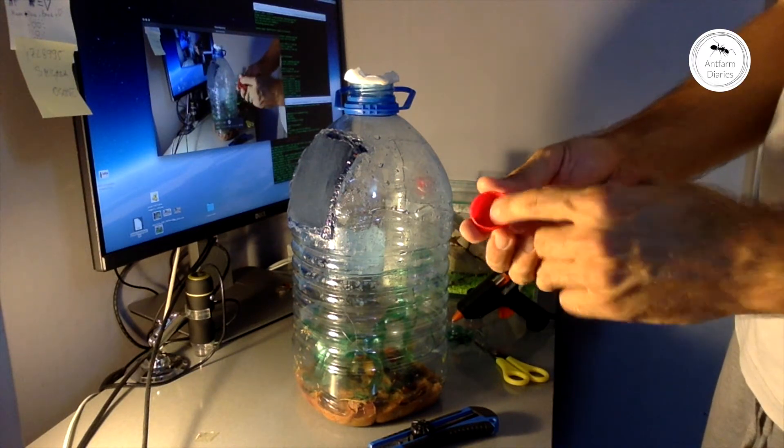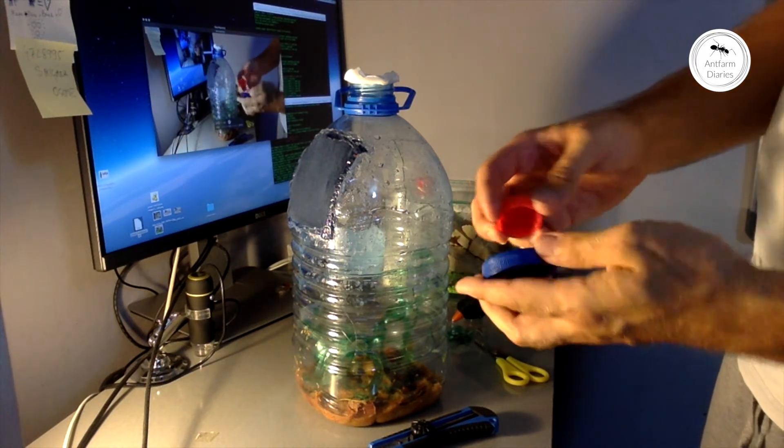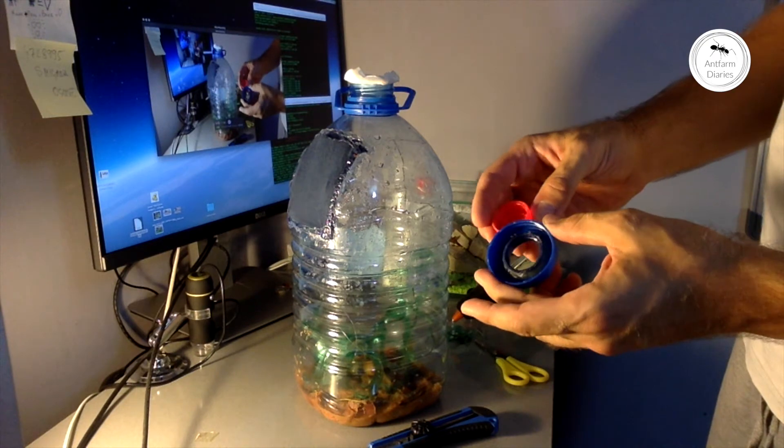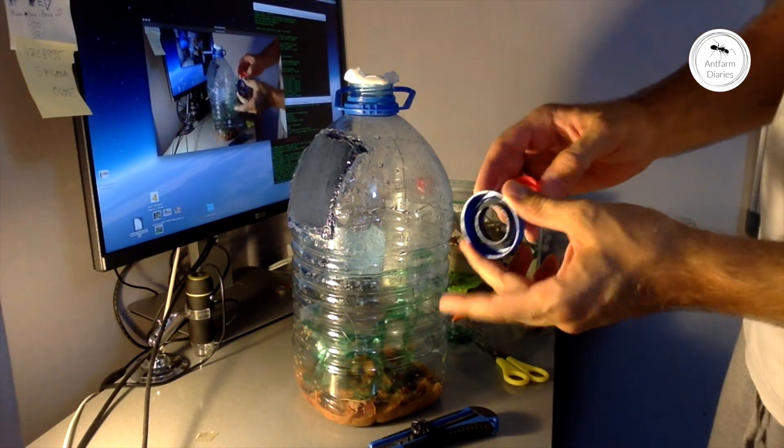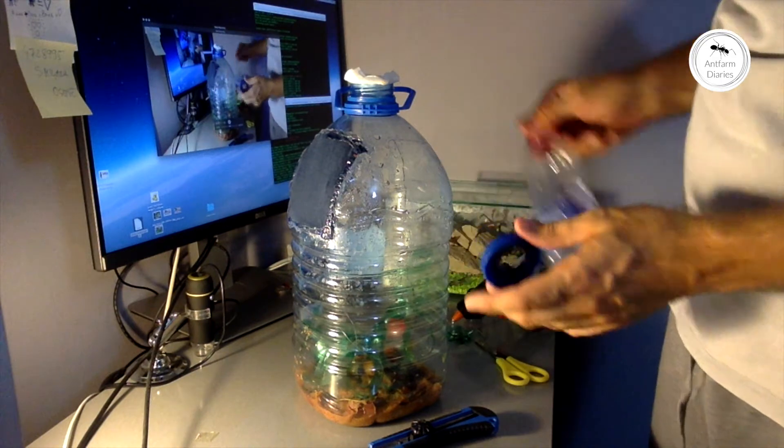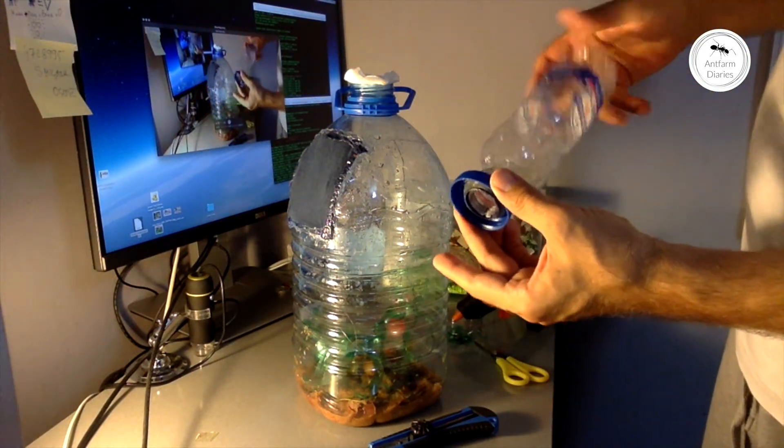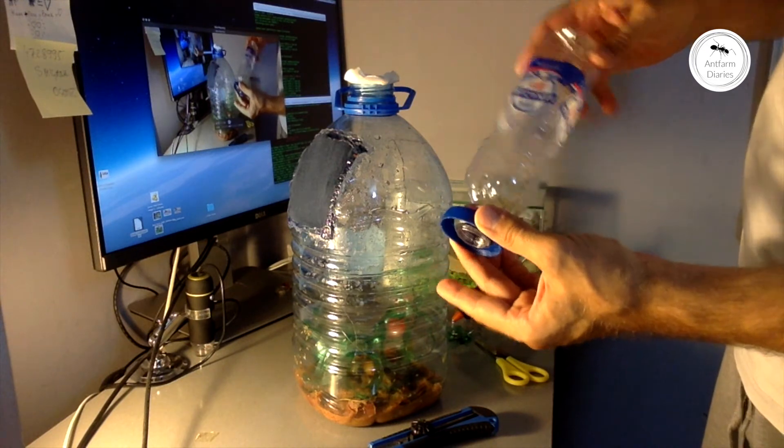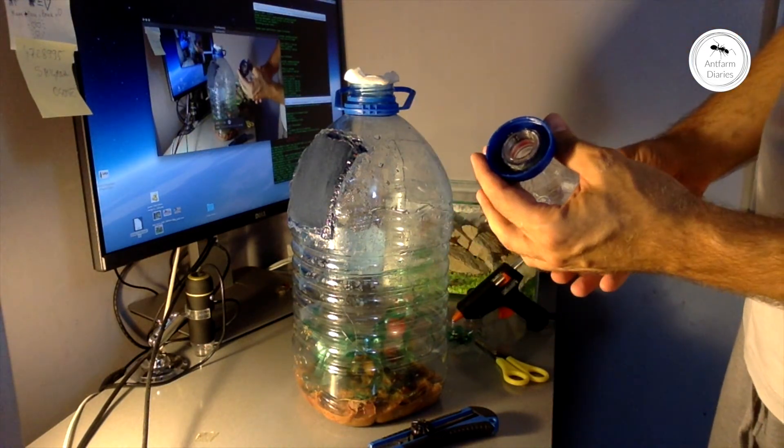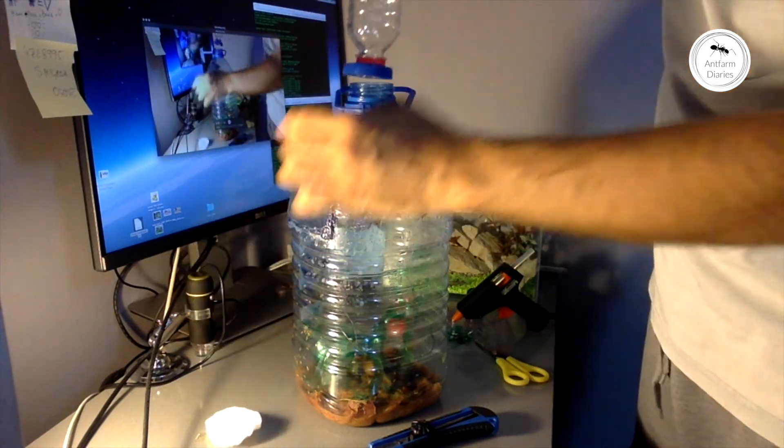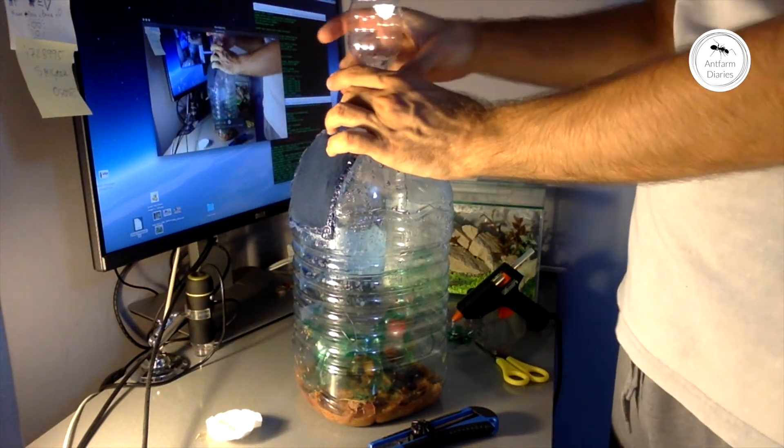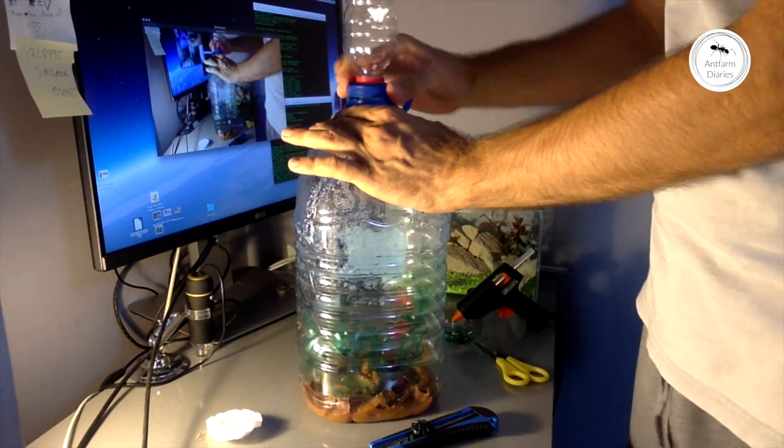And then I used hot glue to glue it inside of the big lid. So I can take the smaller pet bottle and screw it inside into the bigger lid. And then I can just put the whole construction at the top of the big bottle.